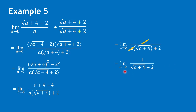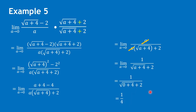We can now substitute 0 for a. We have 1 over the square root of 0 plus 4 plus 2. The square root of 4 is 2, so we have 2 plus 2 equals 4 for the denominator. Therefore, the limit for example 5 is 1 over 4.